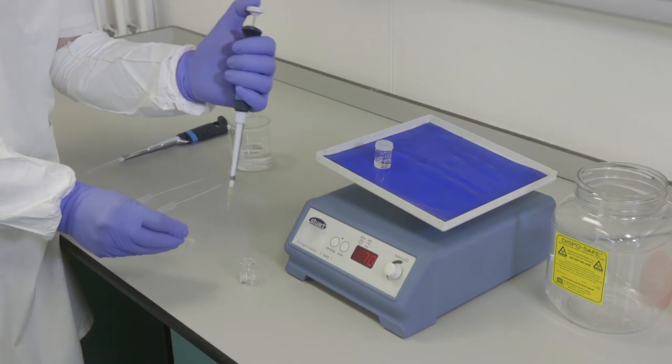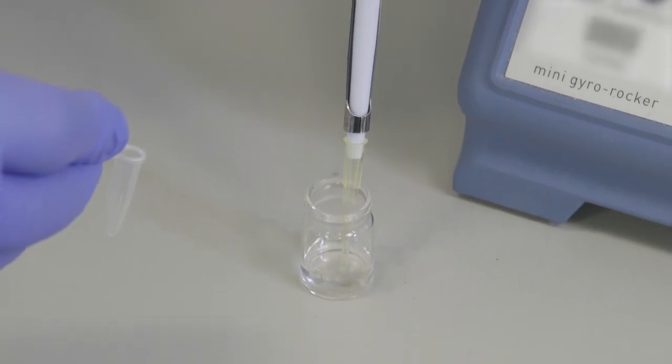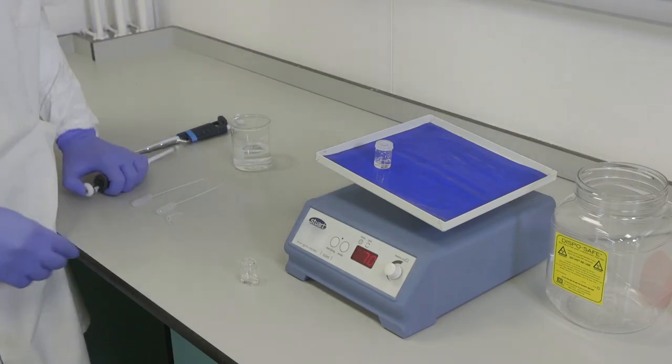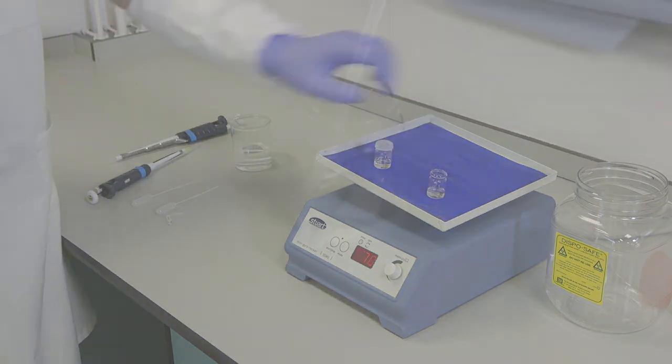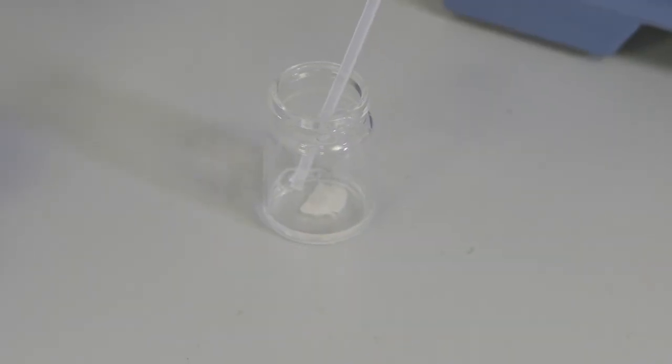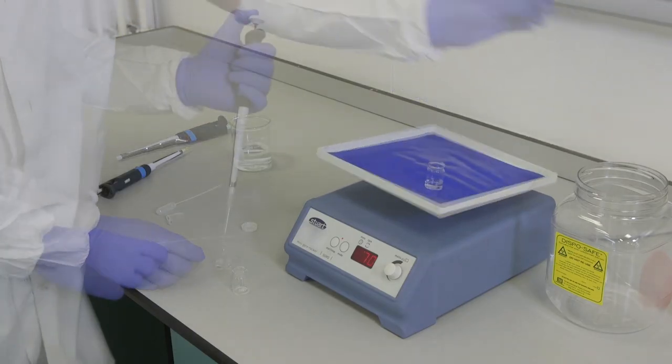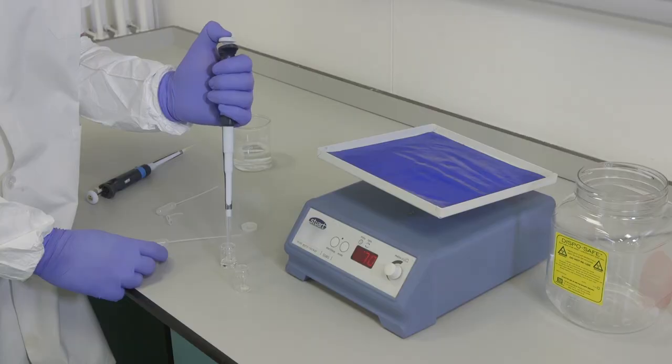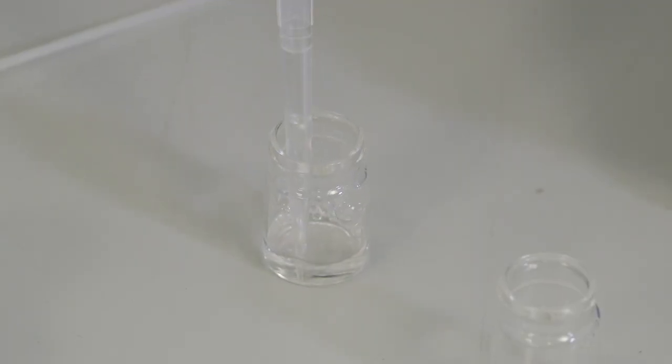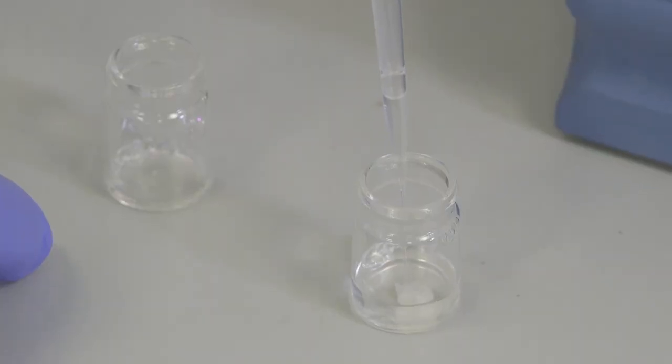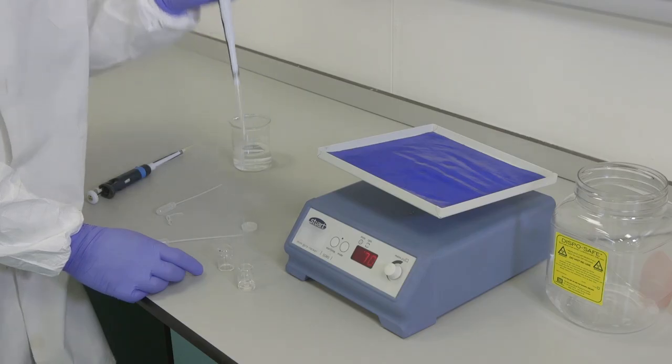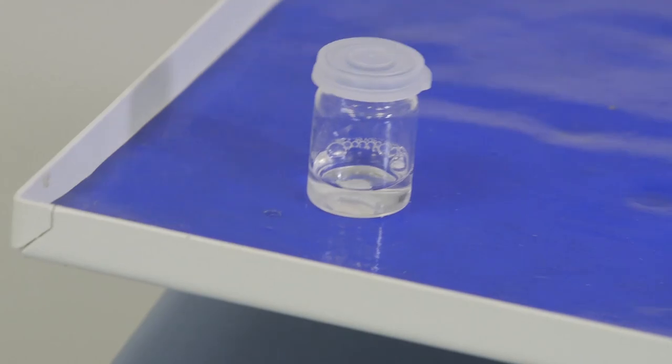Prepare the blocking solution by adding 4% Normal Goat Serum to 1% Tris Triton solution. Carefully remove the 1% Tris Triton solution from the last wash and add the blocking solution to the brain slice. Leave to block for 1 hour with agitation.